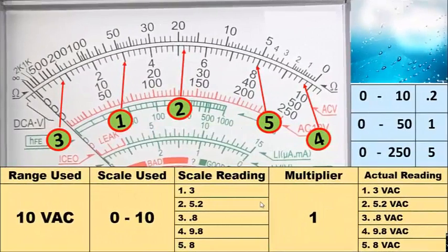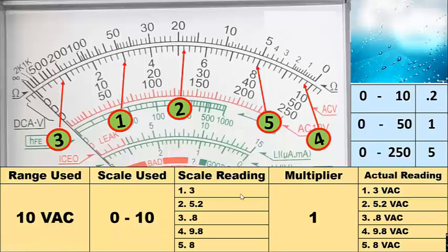We have an example. This is the AC voltmeter chart. The first column is the range used, the next column is the skill used, then the third column is skill reading, the fourth column is the multiplier, and the last column is the actual reading. For number 1, because we are using skill 0-10, we are using the range 10 volts AC.